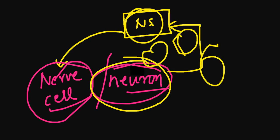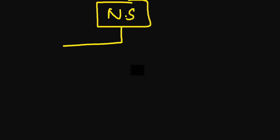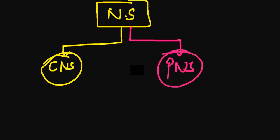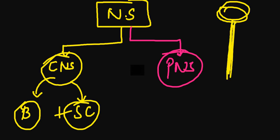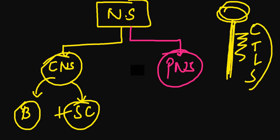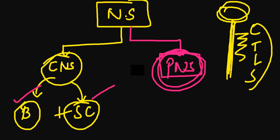All neurons combined together make up your nervous system. The nervous system has two divisions: the CNS and the PNS. The CNS consists of your brain plus your spinal cord — including the cervical, thoracic, lumbar, and sacral regions. The PNS — peripheral nervous system — is everything in your body apart from the brain and spinal cord.